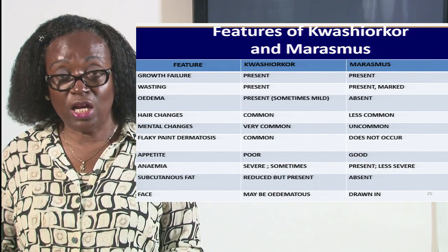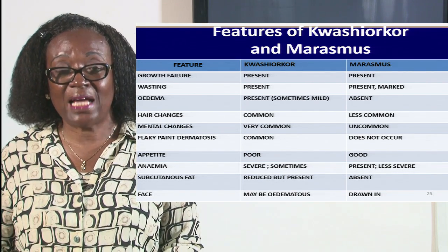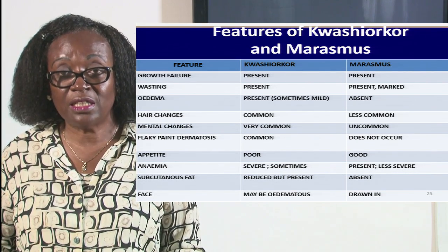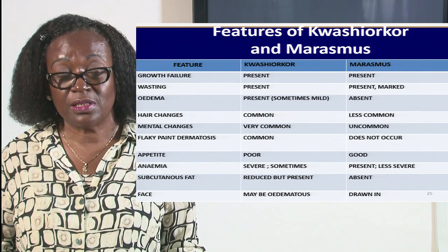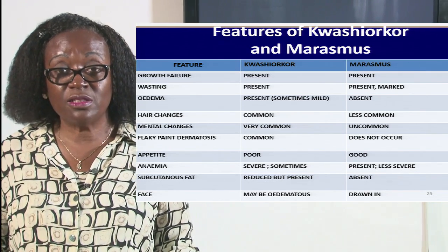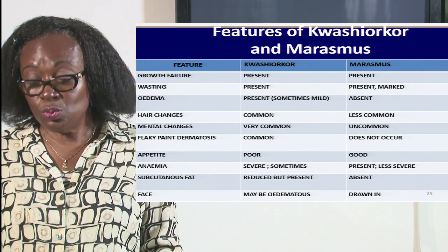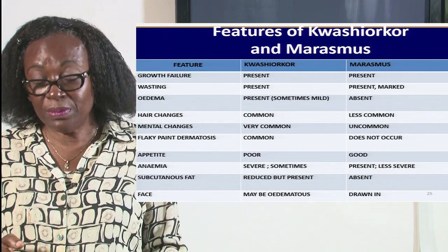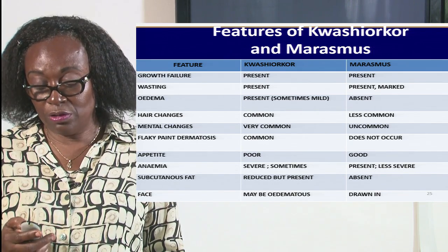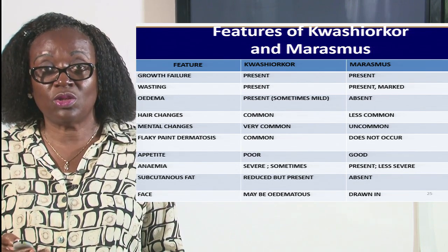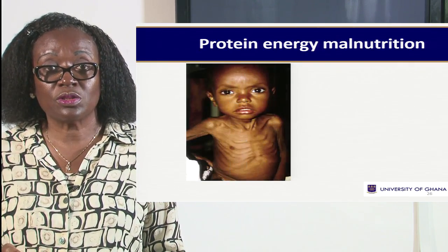Most of the time when children become edematous, they are looking big — mothers think their children are growing fat, but that is not it. It is kwashiorkor. And sometimes you also see the protruding belly, and the hair to be very reddish and very thin — that is typical of kwashiorkor. And then with the marasmus child, the child is actually starved — we see the child very thin, you can count the ribs, the eyes look big, you see the small body with a very big head. These are typical characteristics of the two disorders — kwashiorkor and marasmus.